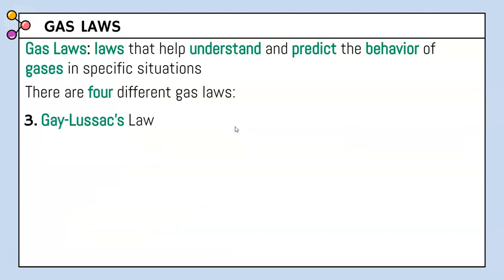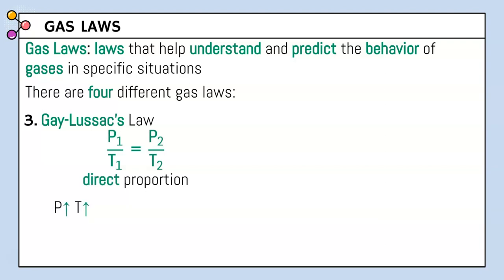Our next gas law is Gay-Lussac's Law: P1 over T1 equals P2 over T2. This equation looks just like Charles' Law but with different variables, so it is also a direct proportion — when pressure goes up, temperature goes up, and when pressure goes down, temperature goes down.